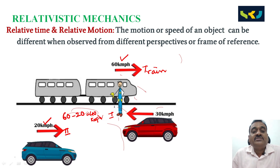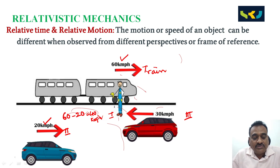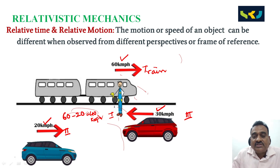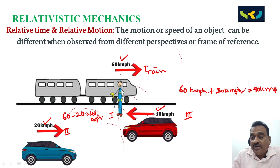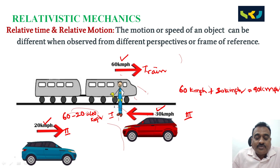The third observer is in another car traveling in the opposite direction at 30 kilometers per hour. From this observer, the train seems to be moving at 90 kilometers per hour — that is 60 plus 30. Thus, the velocity of the train is different for different observers. Thus, the motion is relative.